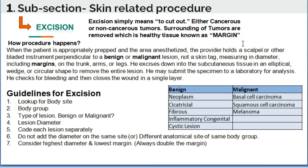What is excision? Excision means to cut out either cancerous or non-cancerous tumors. In addition to that, in this procedure the surrounding of tumors — healthy tissue — is removed, which is known as margin.